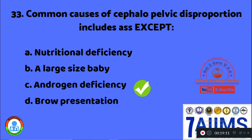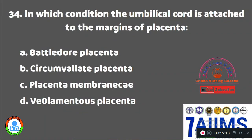Question 34: In which condition is the umbilical cord attached to the margins of the placenta? Option A: battledore placenta. Option B: circumvallate placenta. Option C: placenta membranacea. Option D: velamentous placenta. The right answer is Option A, battledore placenta, in which the umbilical cord is attached to the margins of the placenta.